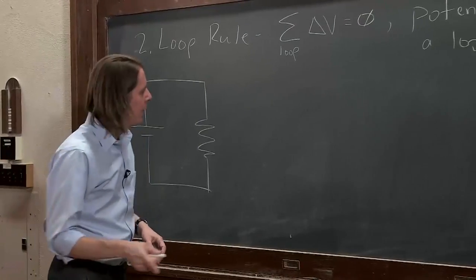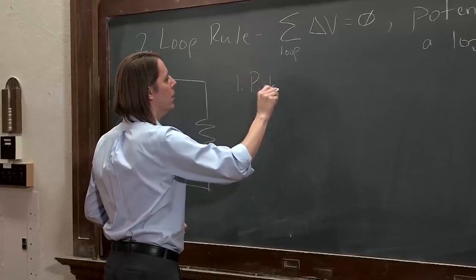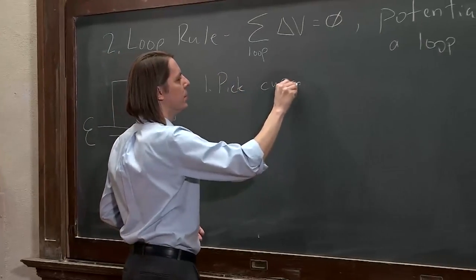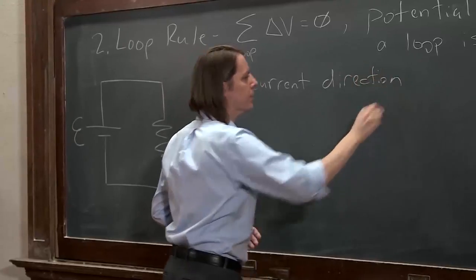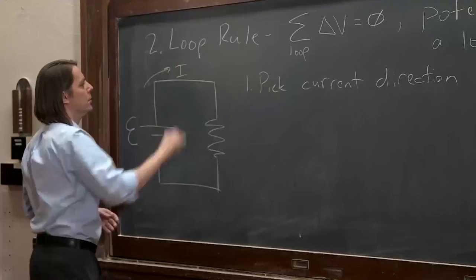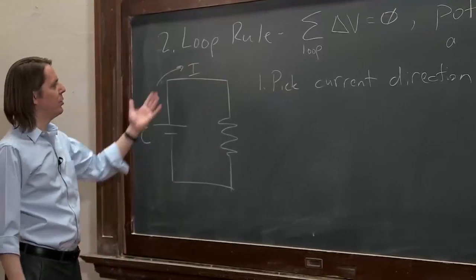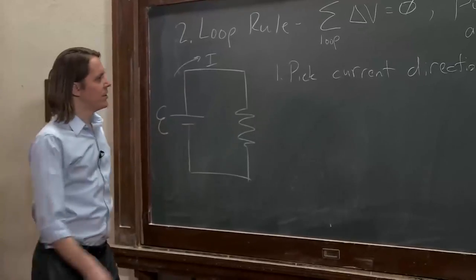So step one is to pick a current direction. Just like we did with the junction rule, let's just assume the current flows that way. And I don't need to put a number on it, because there's only one current in this case. We only have one loop.